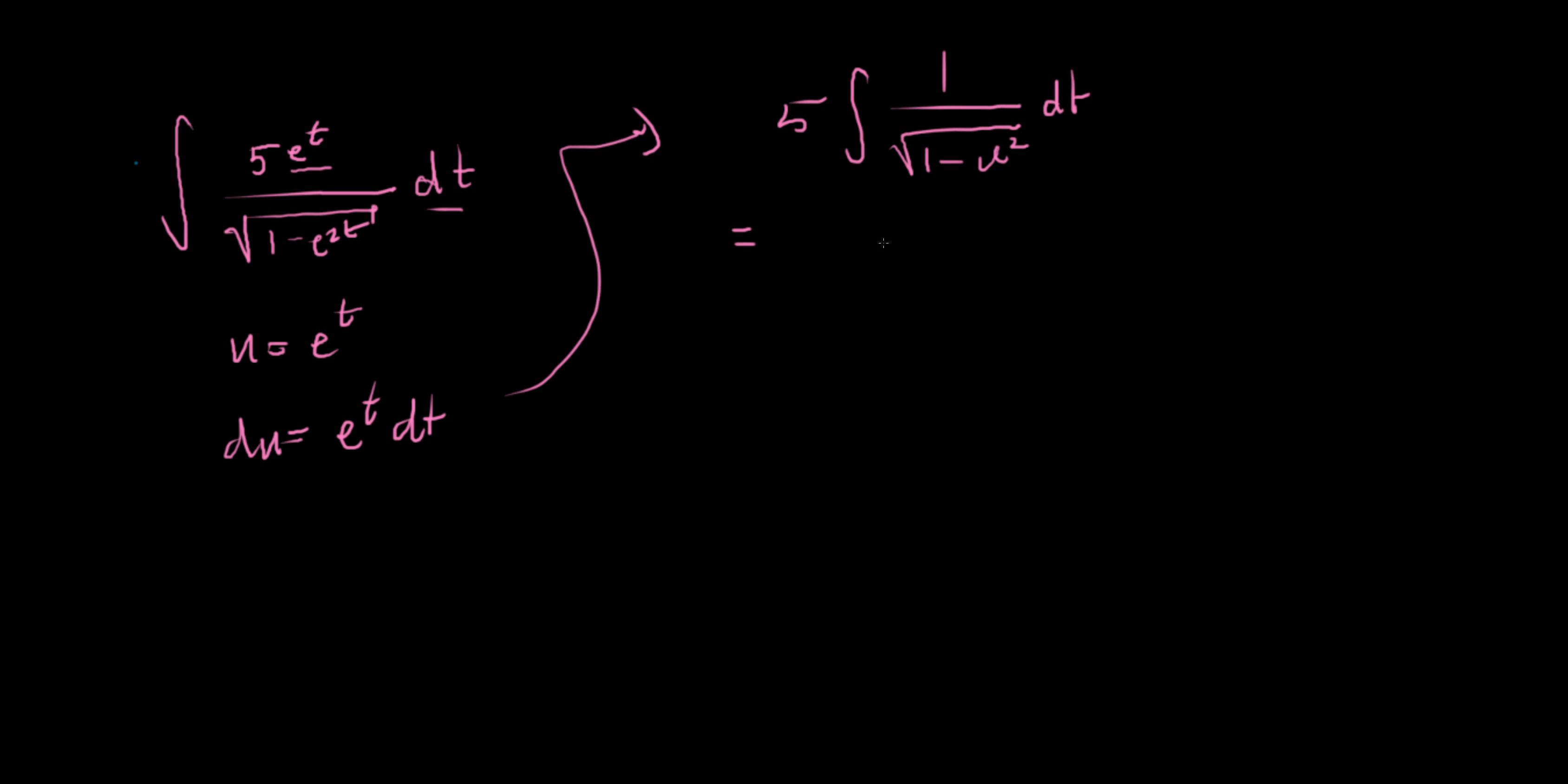So we get 5 sine inverse of u plus a constant, and then we just substitute back in for u. So we have 5 sine inverse of e^t plus c, and that's it, that's the answer right there.